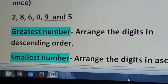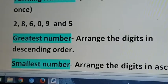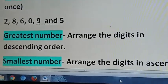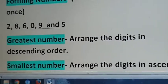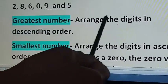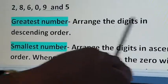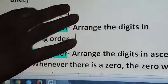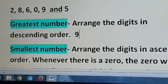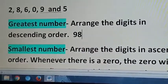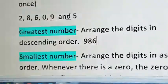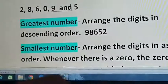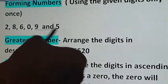Now forming numbers using the given digits only once. Six digits are given: 1, 2, 3, 4, 5, 6 — we have to form the greatest number and the smallest number without repeating any digit. To make the greatest number, arrange the digits in descending order — from greatest to smallest. So the greatest digit is 9, then 8, then 6, then 5, then 2, then 0. Done — very simple.